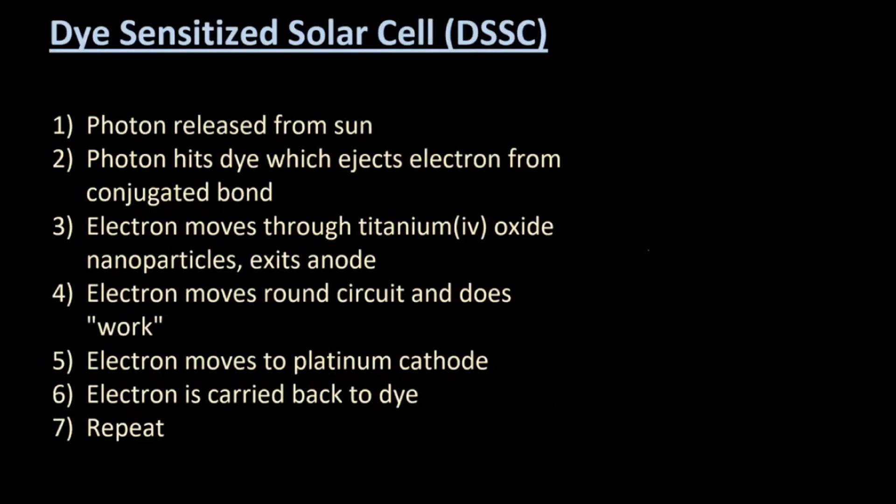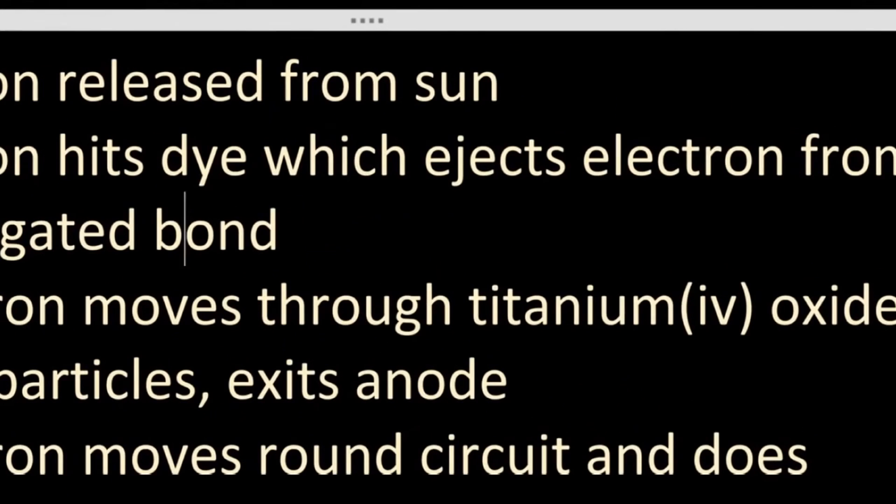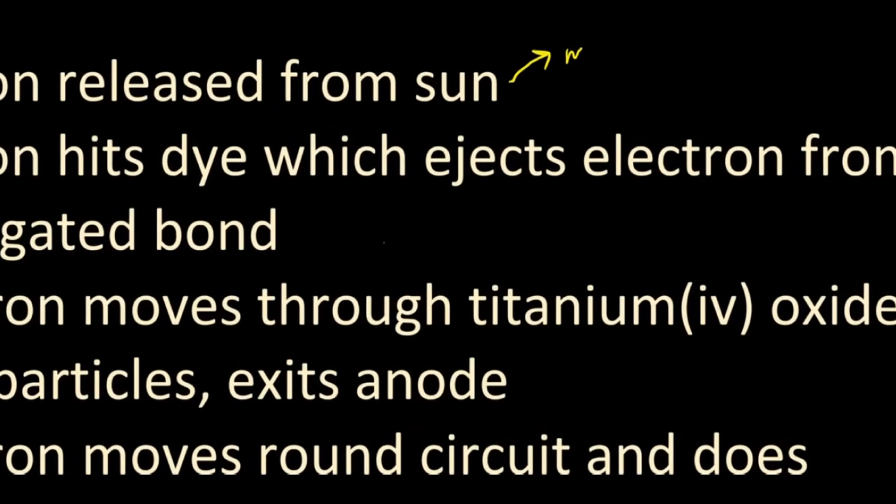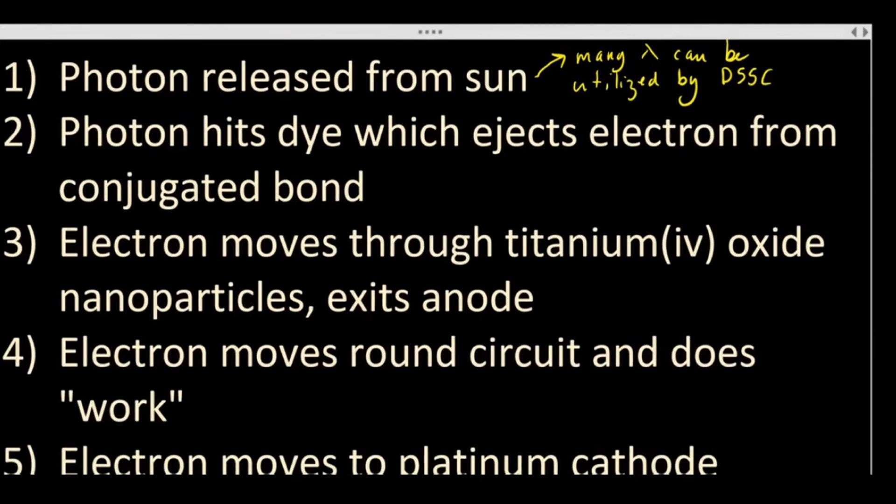These are the seven steps and they've only asked quite trivial questions about this. So step one, the photon is released from the sun. Now the sun's different wavelengths of photons can be used in this solar cell. That's a byproduct of the nanoparticles, so many different wavelengths can be used.